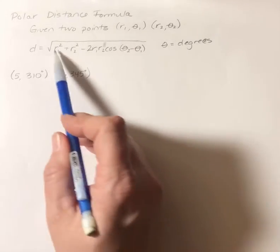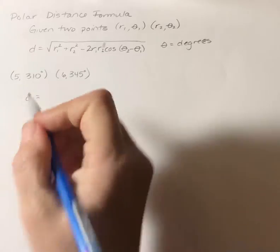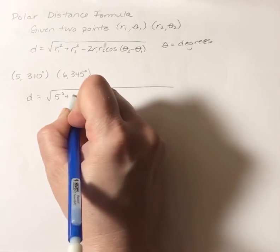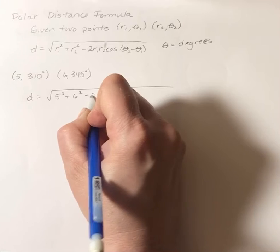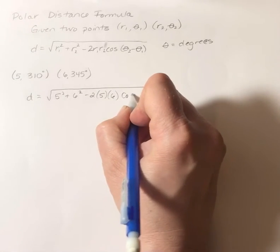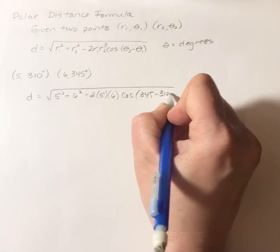So I'm going to plug it in. So my distance between those two points is the square root of 5 squared plus 6 squared minus 2 times 5 times 6 times the cosine of 345 minus 310.